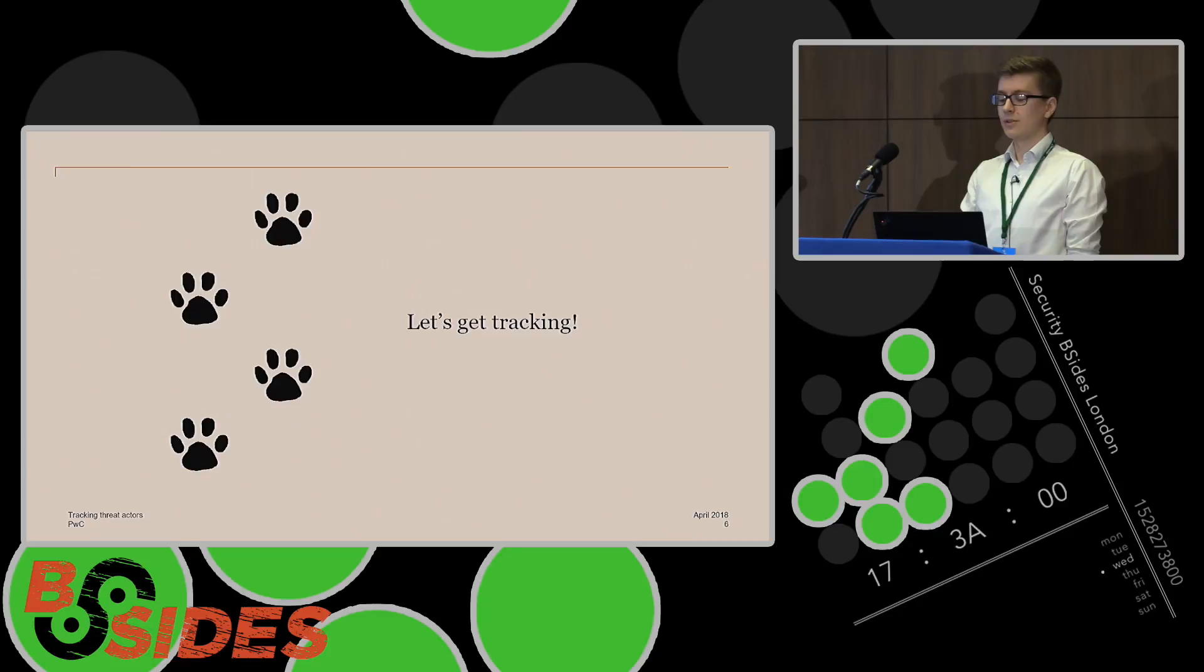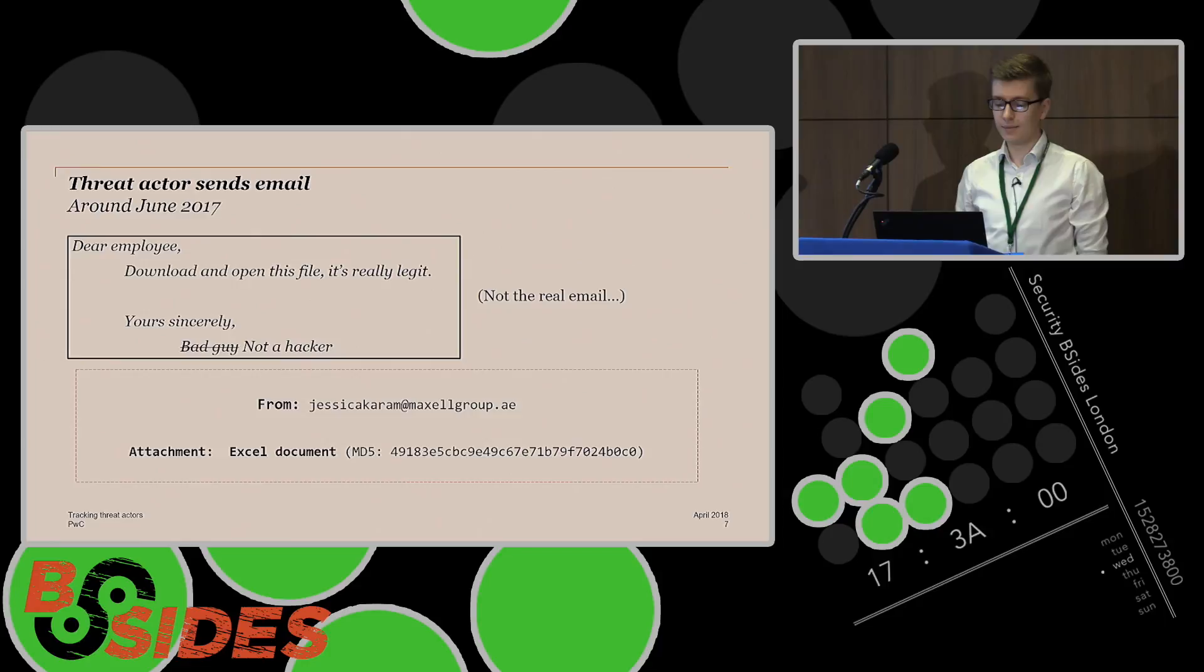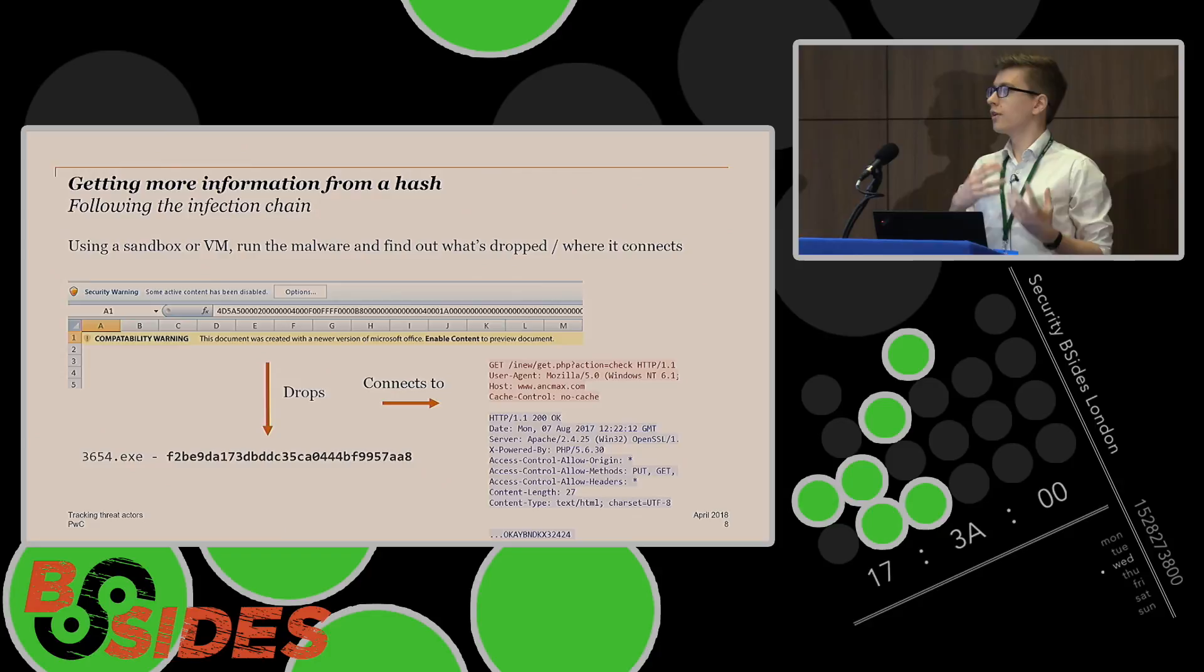So let's get tracking. The scenario was that around June 2017, we were alerted of an email. That isn't the actual email right there, that's just kind of an idea of what the email looks like because all phishing emails essentially look like this. But the main points in that email were that the from address was a Jessica Karam at maxillgroup.ae and also had an Excel document attachment. So those are the main two things that we want to focus on here. And if we want to know more information about this threat actor, I think the best place to start is by looking at that Excel document and finding some things about it. The quickest way to get more information out of this document is to maybe run it in a sandbox or a virtual machine, which is what I did in that situation. So I've got a safe environment set up where I've got the virtual machine that's disconnected from anything I care about.